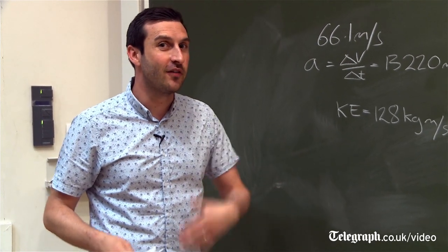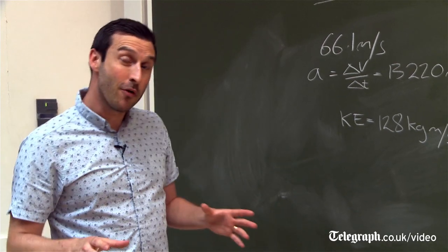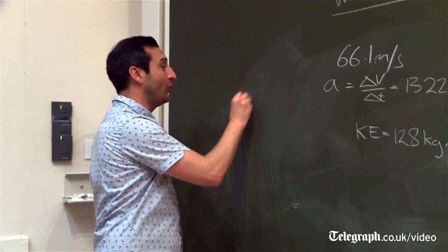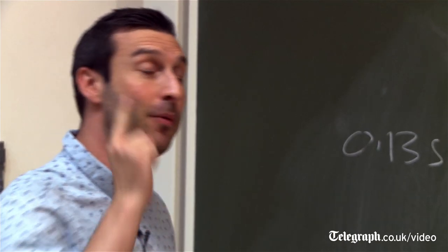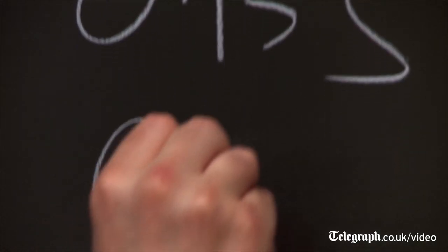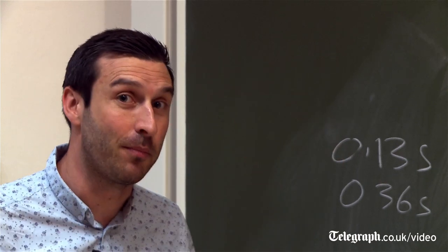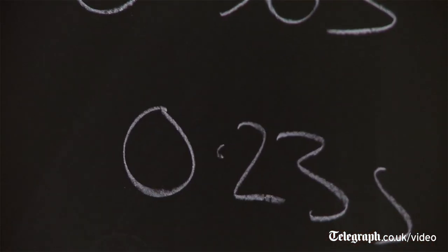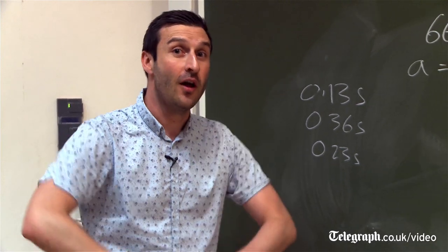So this is all well and good for the person serving the ball, but what about the person receiving it? Well, under laboratory conditions, the human response time is around 0.13 seconds. Now the time it takes for the ball to get from baseline to baseline is 0.36 seconds. So this means the person, once they've registered the ball is coming at them, has only got 0.23 seconds to coordinate a response. So you can see why this is so difficult for someone to return a shot of this kind.